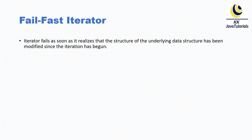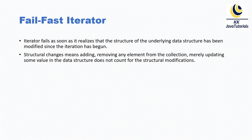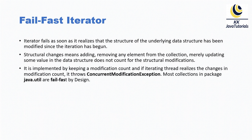That is what is called a fail-fast iterator — it prevents the underlying collection from becoming corrupt. Structural changes mean adding or removing any element from the collection. Merely updating some value in the data structure does not count as a structural modification. So a structural modification is nothing but adding or removing elements from the underlying collection; updating any element does not count as structural modification. It is implemented by keeping a modification count.